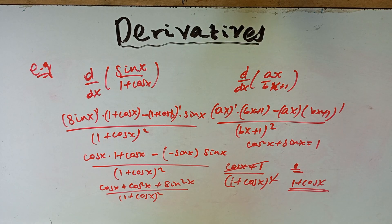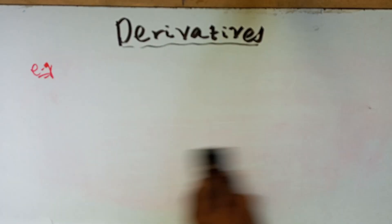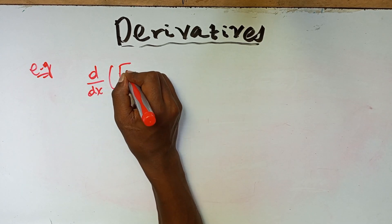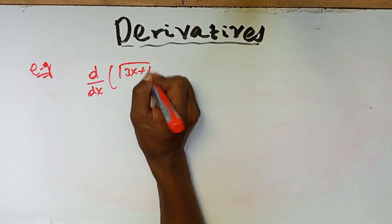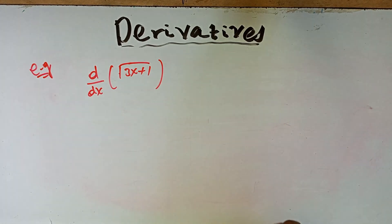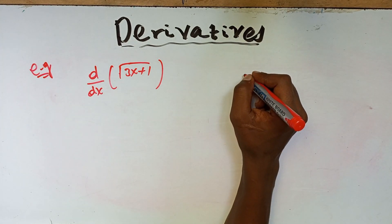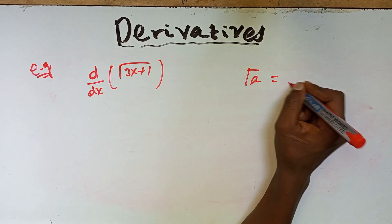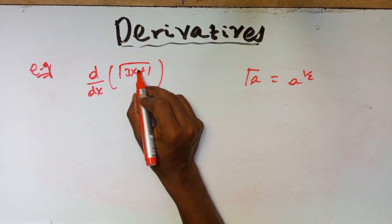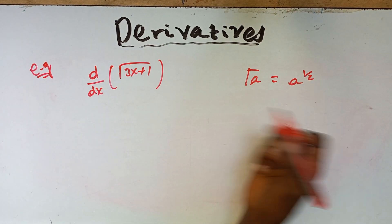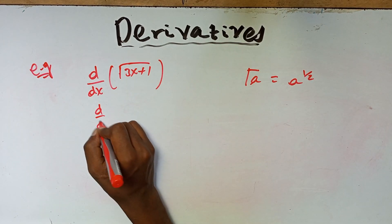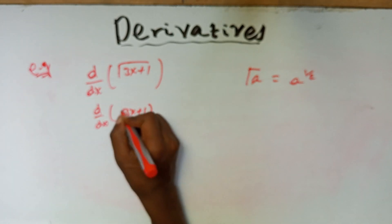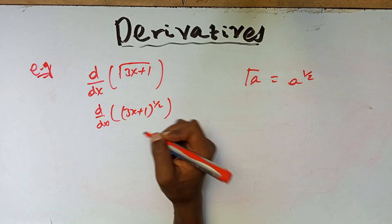Let's take another example: d/dx of radical (3x plus 1). Whenever a radical is given, we use the rule that the square root of a equals a to the power of one over two. So we rewrite this as d/dx of (3x plus 1) to the power of one over two.